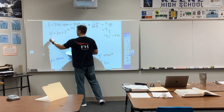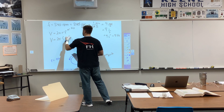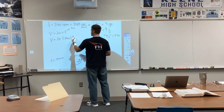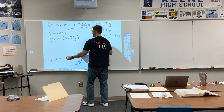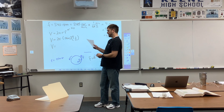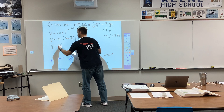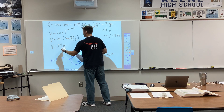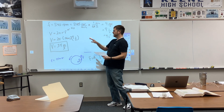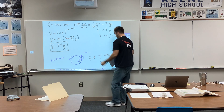Velocity equals 2 times π times the radius, which is 0.06 meters, times the frequency, which is 9 inverse seconds. Plugging into the calculator: 2 × π × 0.06 × 9 gives approximately 3.4. The units work out to meters per second, so 3.4 meters per second. A speck of dust would be traveling at 3.4 meters per second.